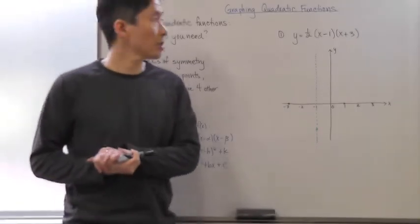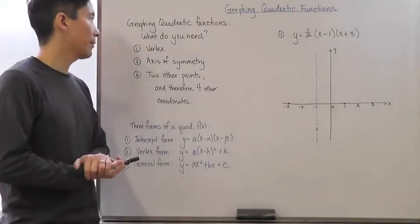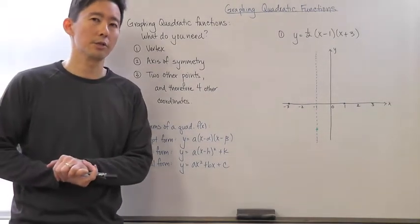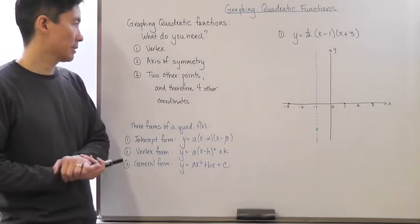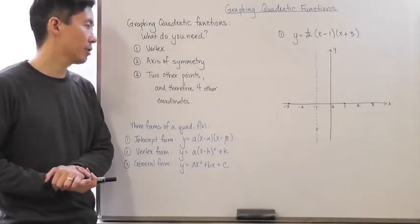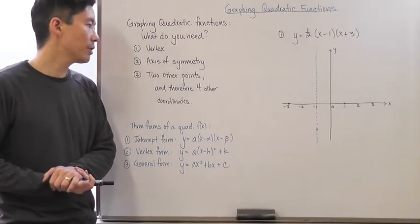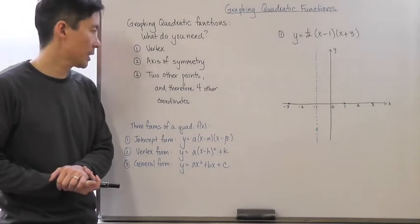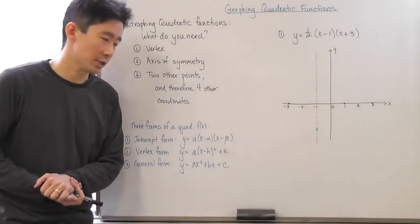Let's go ahead and take a look at graphing quadratic functions. If you want to graph quadratic functions, the basic things you need are: knowing where the vertex is, and therefore where the axis of symmetry is, and finding two other points — giving you four additional coordinates — so you can come up with a reasonable graph.